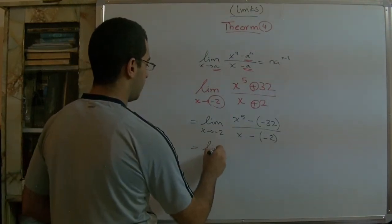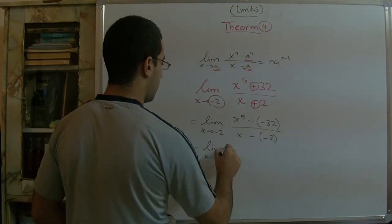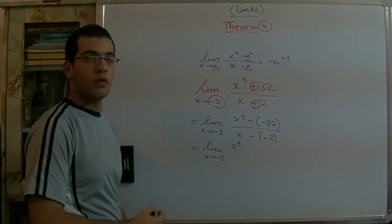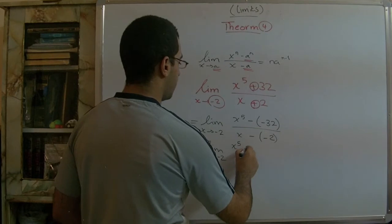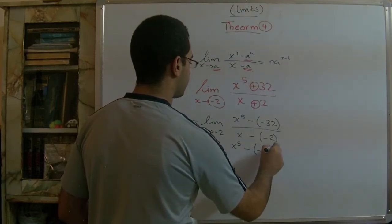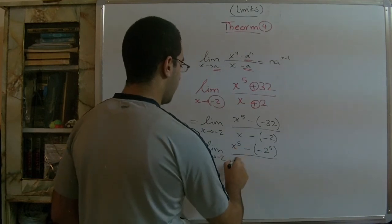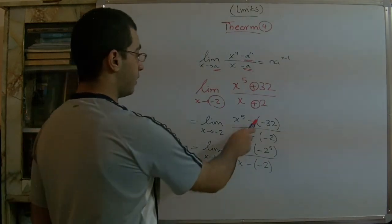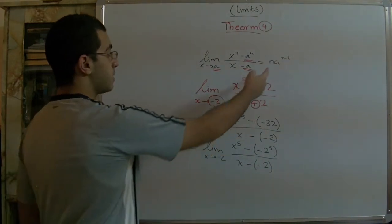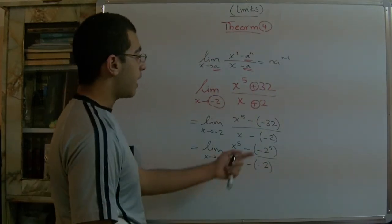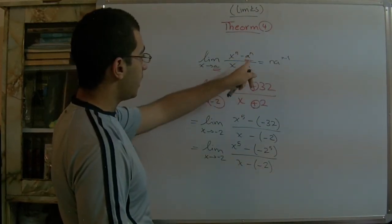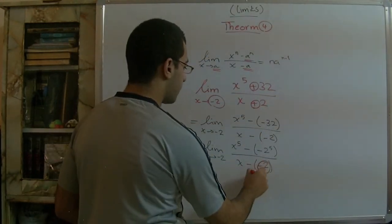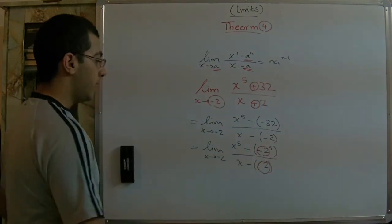So the limit of x approaches -2, x^5. Here of course 32 equals 2^5, so here -(-2)^5, x^5 over x - (-2). And I have written this this way because when we substitute in this formula, we will not type the a here as 2. We will write the a as -2. So I must separate it in order to write it in the formula in a correct way.